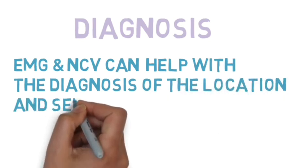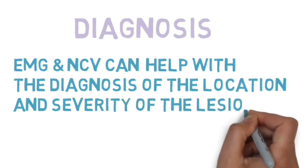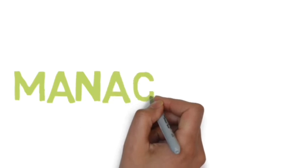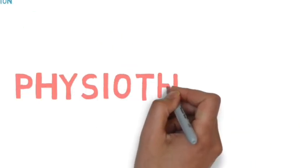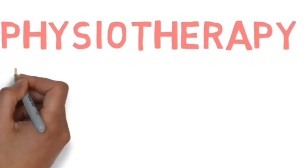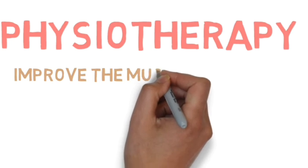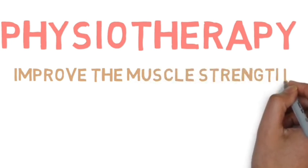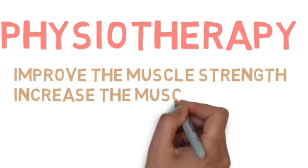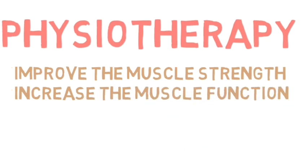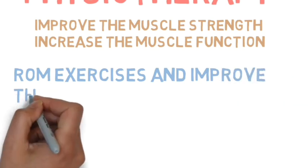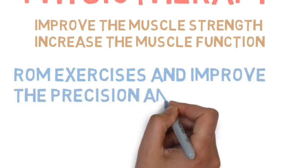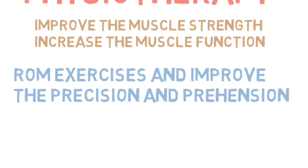Management of Klumpke's palsy involves physiotherapy, as physiotherapy plays a very important role in bringing back the functionality of the muscle as well as the strength. The intrinsic muscles of hand play an important role in gripping activities. The precision, apprehension, and fine motor functions are quite imperative in activities of daily living. Hence, range of motion exercises and certain exercises improve the strength of these muscles.